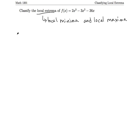So the first thing I want to do is find what my potential local minima and local maxima points are. They come from the critical points of this function, so the first thing I need to do is find the critical points.